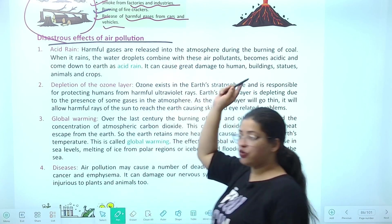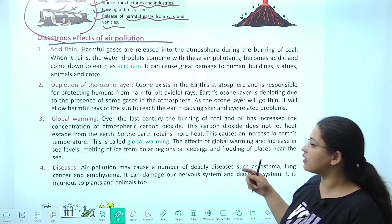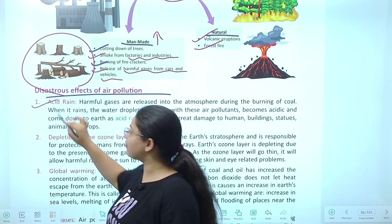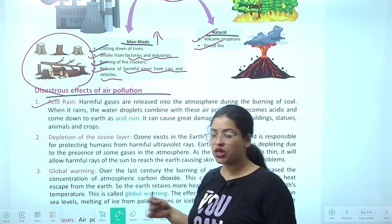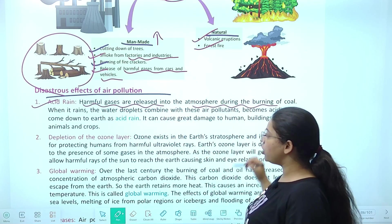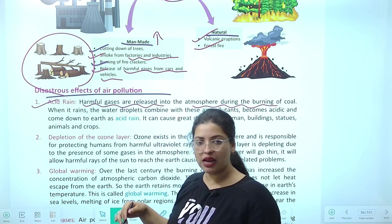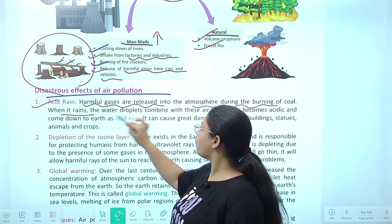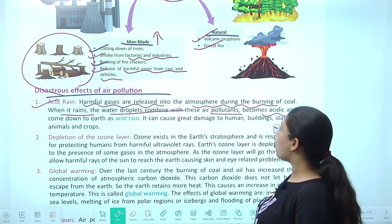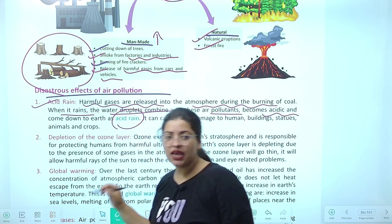Disastrous effects of air pollution. Because we are doing pollution, we have to see the big-level effects. The first is acid rain. Harmful gases that are released into the atmosphere — for example from burning of coal — combine with water droplets during the water cycle precipitation. The water droplets combine with these pollutants in the atmosphere and become acidic. And when they fall to earth, that rain is not normal — it causes acid rain.